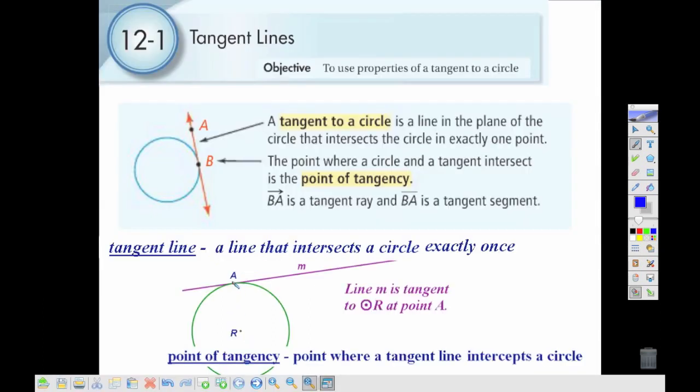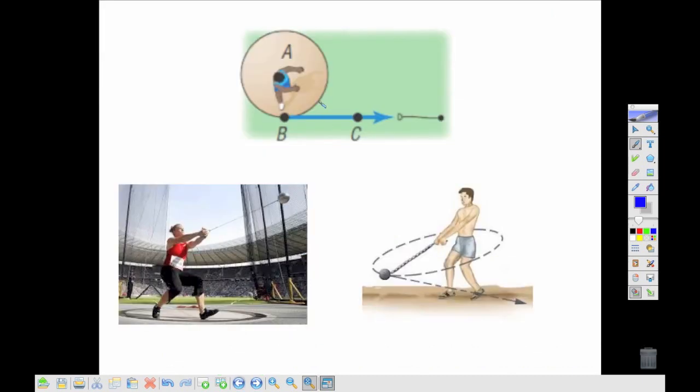We can also talk about the point of tangency as being the point where it actually touches the circle. One way we might see tangent lines in real life would be where we're swinging something around us in the shape of a circle. Now the direction that this thing wants to go is always straight out along the tangent line.